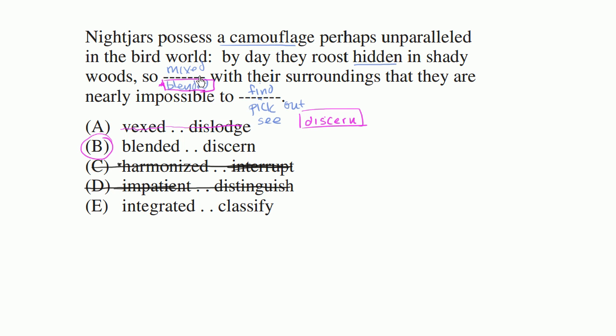So integrated with its surroundings. That's not bad. That's kind of like being mixed or blended. Being integrated means kind of so part of the surroundings that they are nearly impossible to classify. So classifying something means you're really putting a label on it. You're trying to see how it's different or similar to other things. It has some connection to being able to see something or discern or find something. But it goes further. You're not only discerning it or seeing it. You're trying to put it into a bucket. You're trying to classify it.